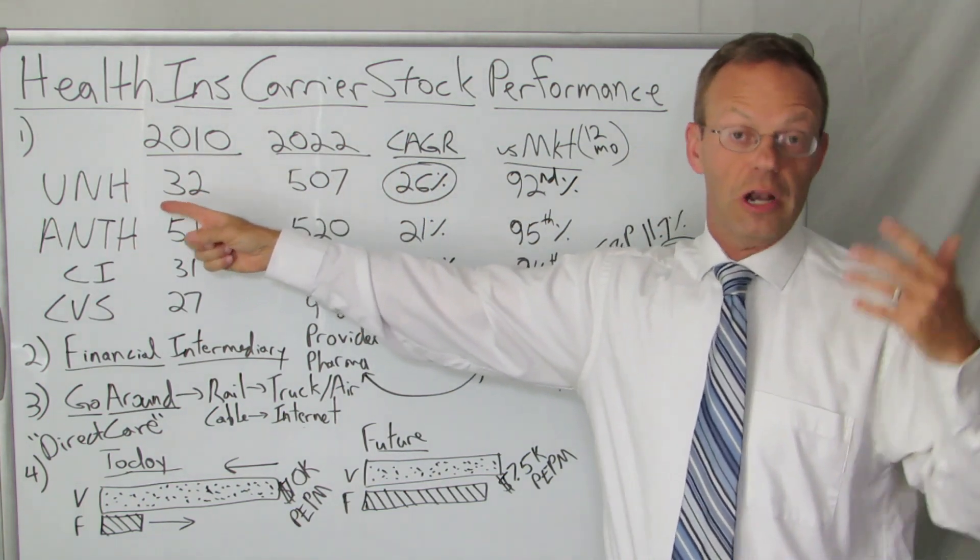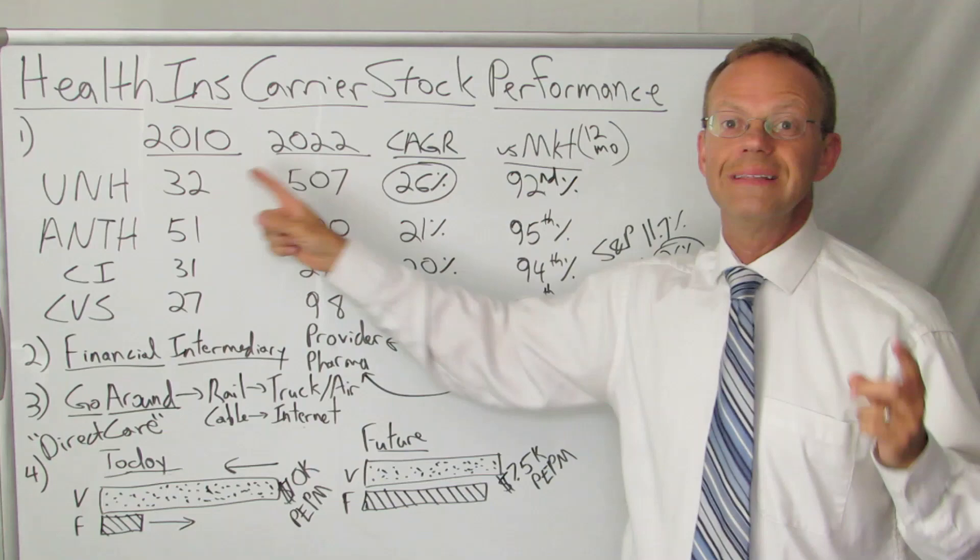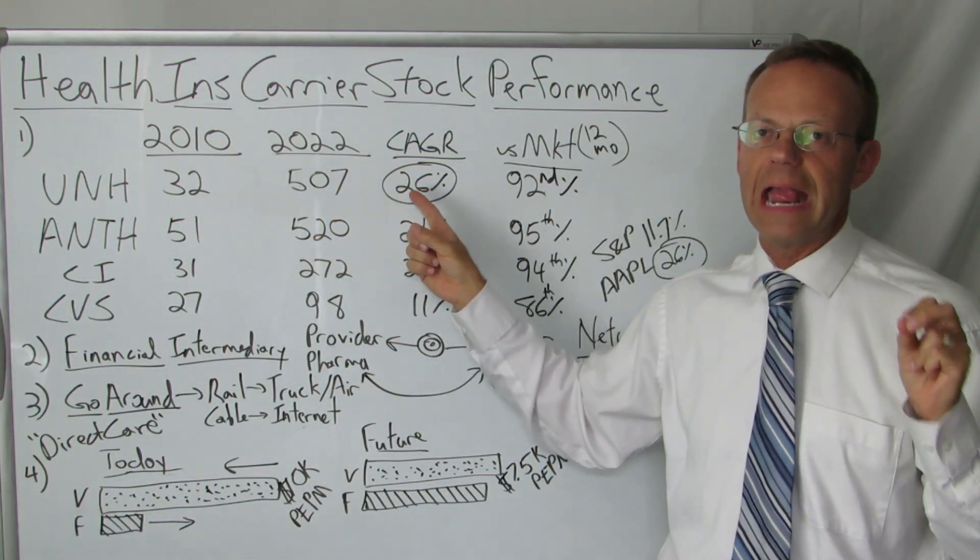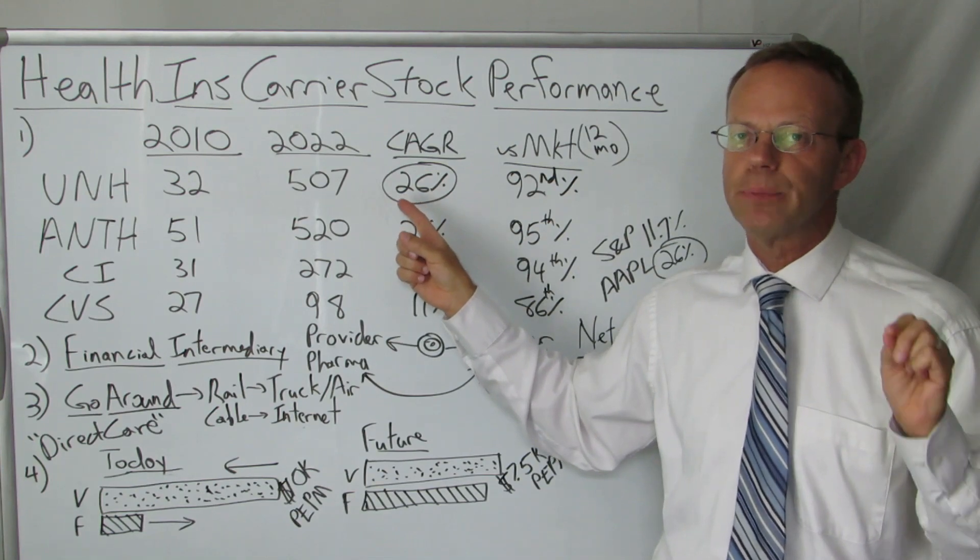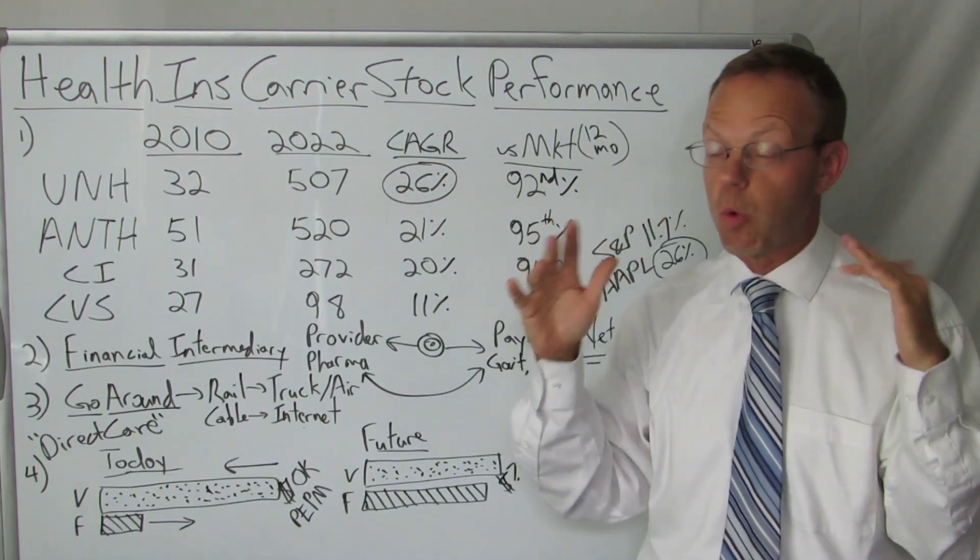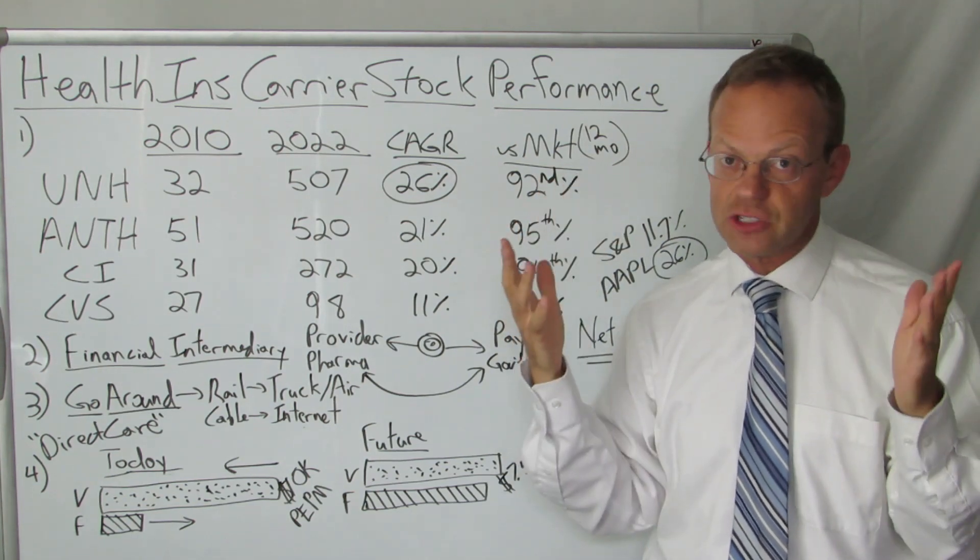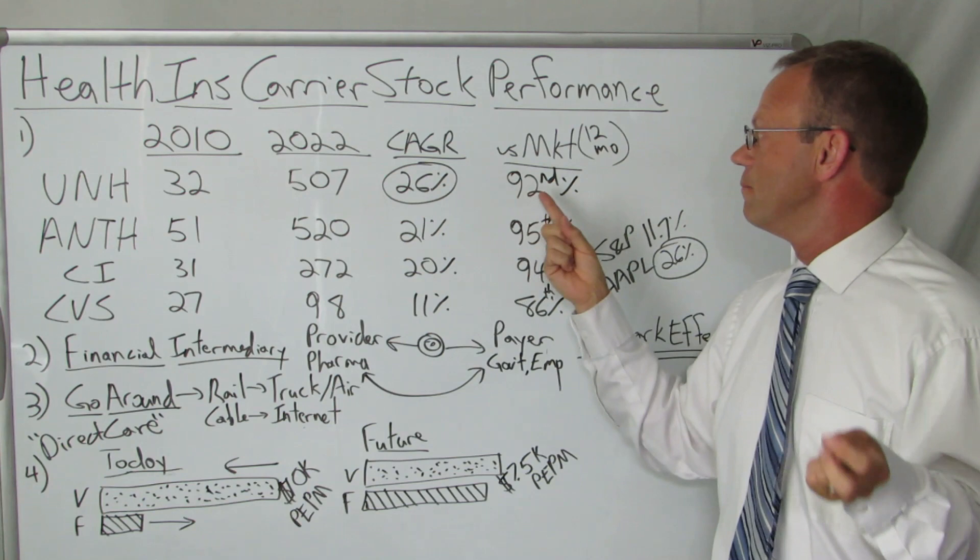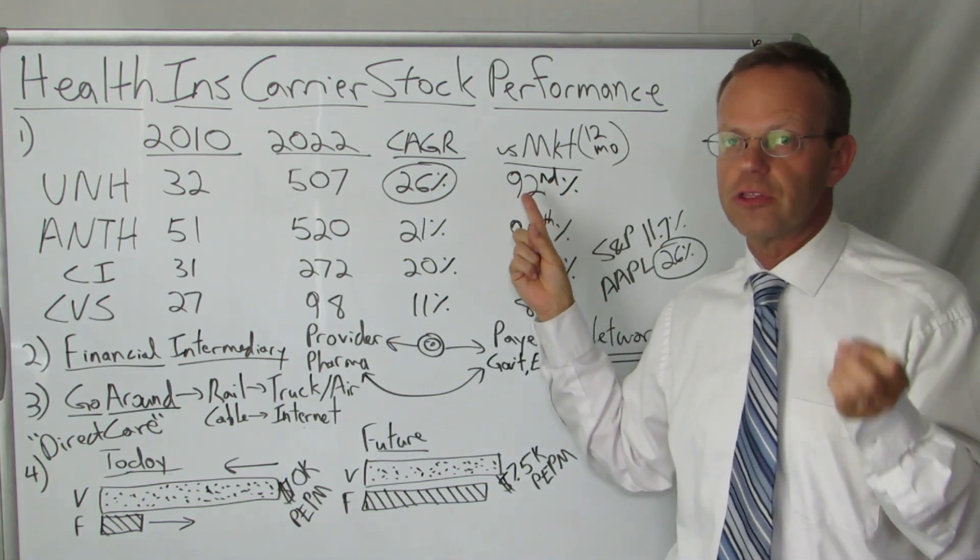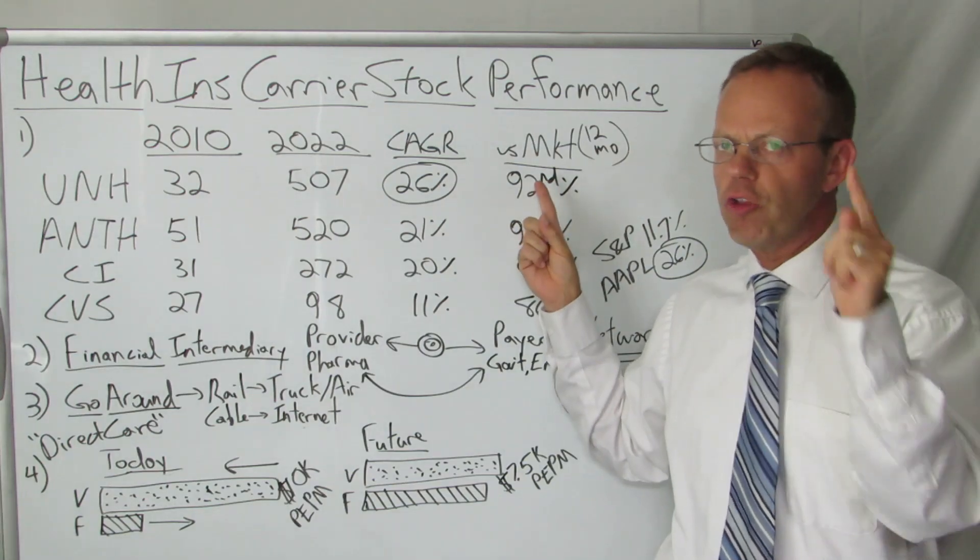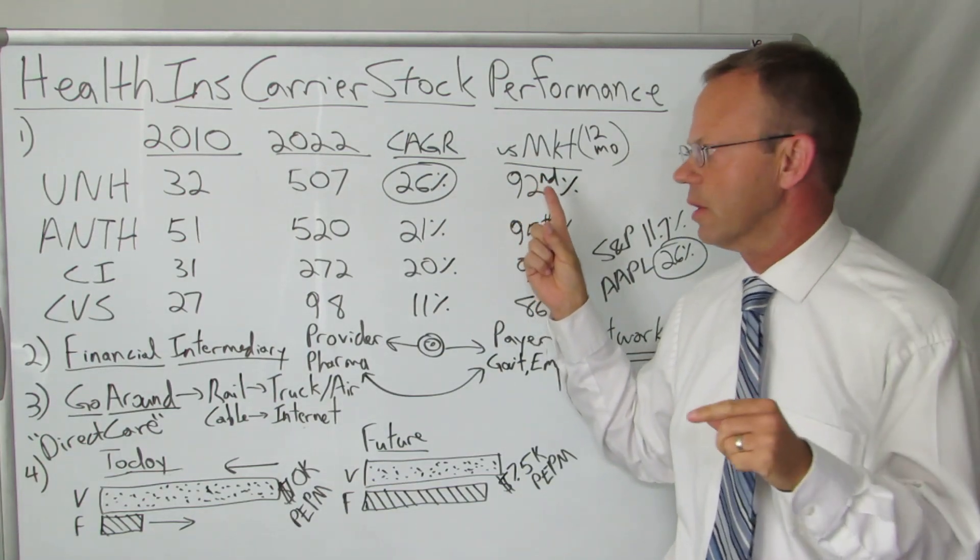Back in 2010, UnitedHealth Group stock was 32. Today, it's 507. That is a compounded annual growth rate of 26% per year, which blows Warren Buffett out of the water. Warren Buffett, greatest investor of all time, is like 20%, right? In the past 12 months, UnitedHealthcare's stock has performed better than 92% of all the other stocks in the U.S. stock market.